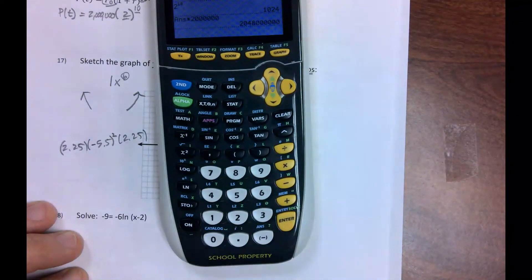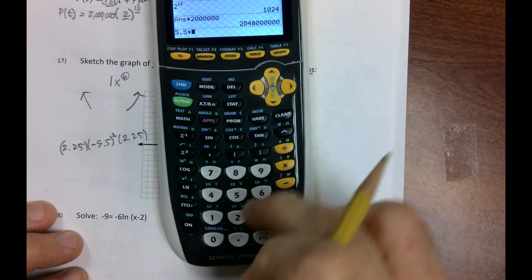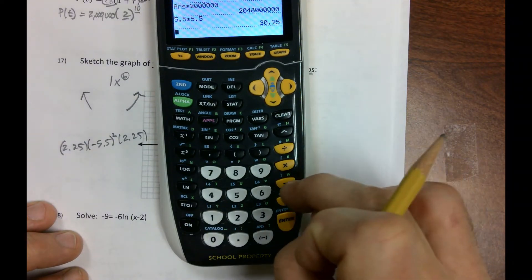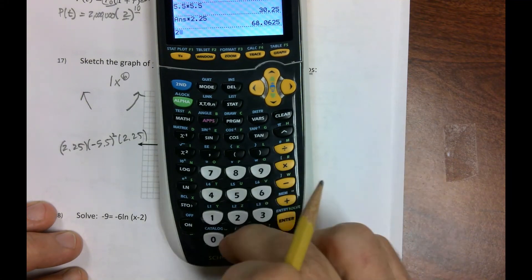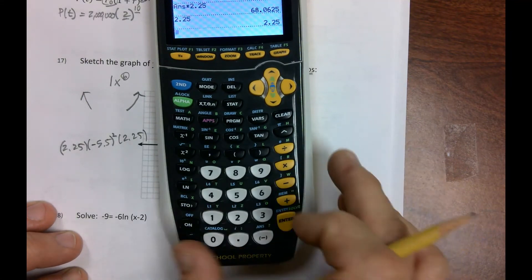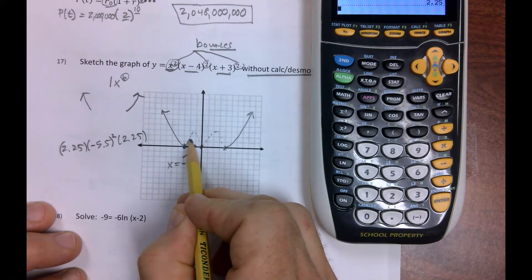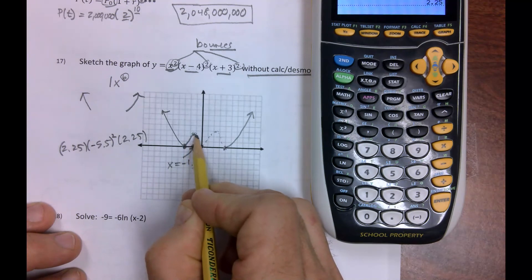So, I need to take this, and 5.5 times itself, times 2.25, times 2.25. And I can see it's going to be 2.25. So that's pretty close, actually. 2.25 would be right about there. So it goes up, and it comes back down.